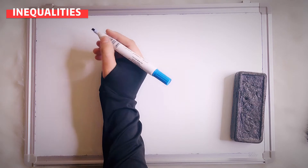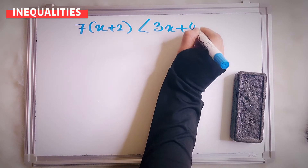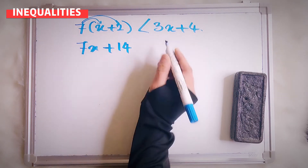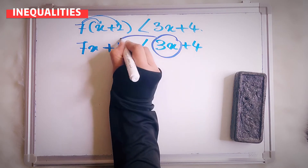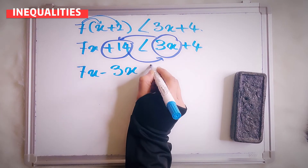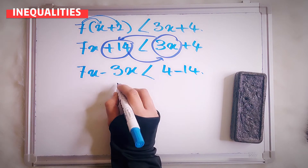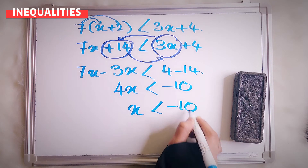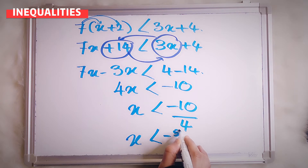Now let's say I give you 7x plus 2 less than 3x plus 4. First of all, you have to expand this. So you have 7x — because 7 times x is 7x, and 7 times 2 is plus 14. Remain the sign the same: less than 3x plus 4. Now I'm going to take 3x to one side and positive 14 to the other. So 7x minus 3x, the sign is still the same, and here 4 minus 14. So 7 minus 3 gives you 4. So 4x less than negative 10. Your x now is negative 10 over 4, which is basically less than negative 5 over 2.